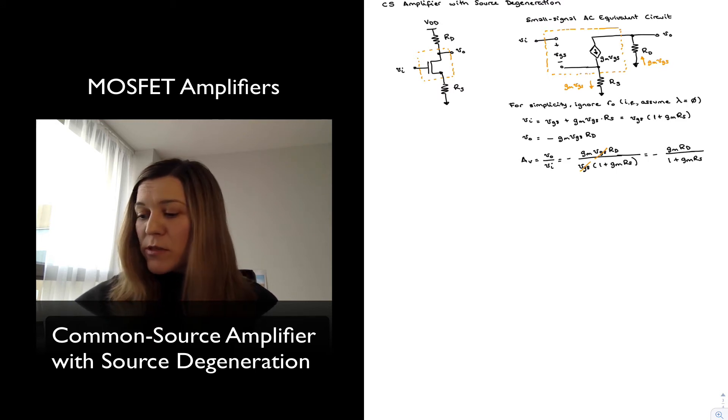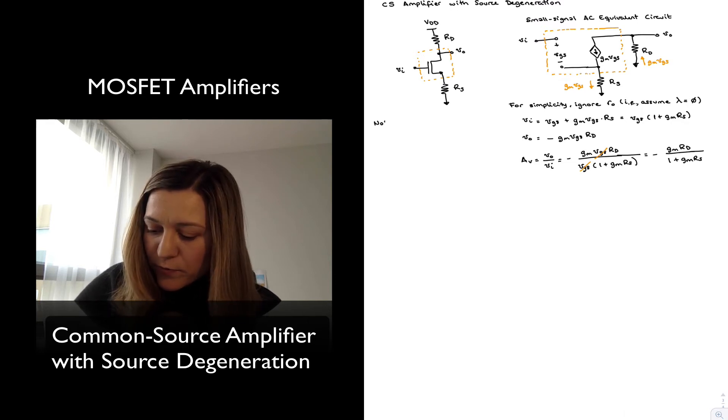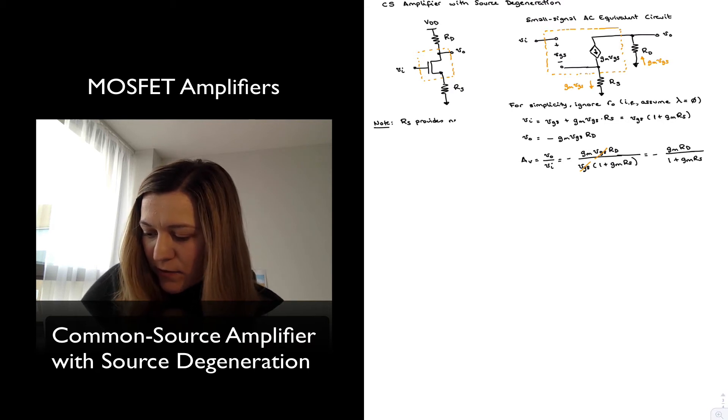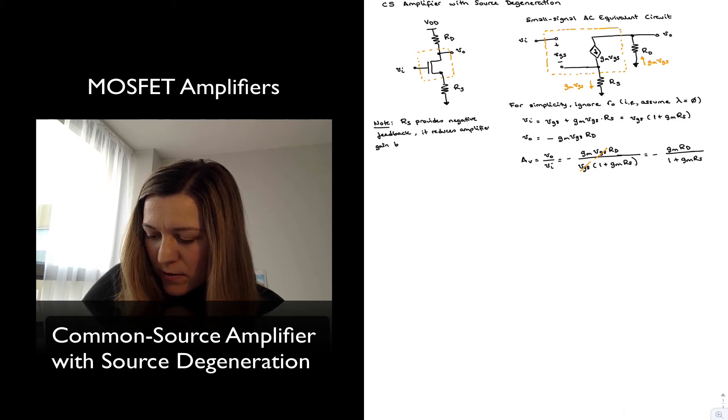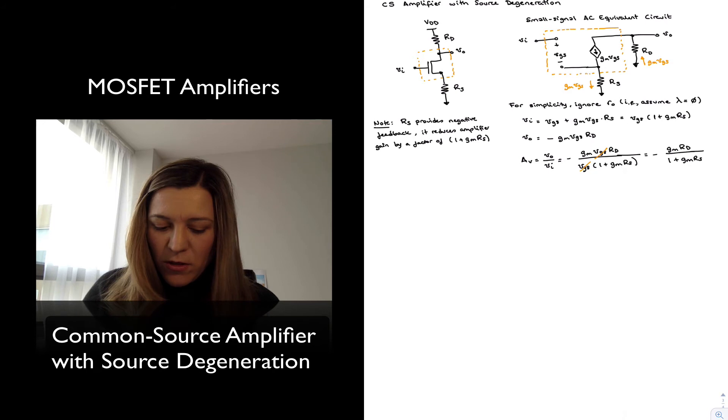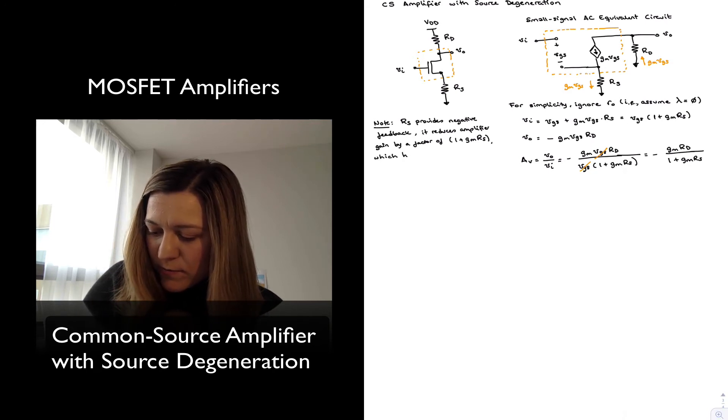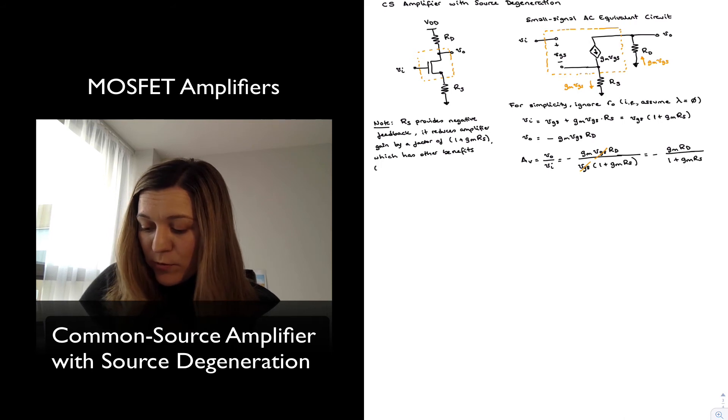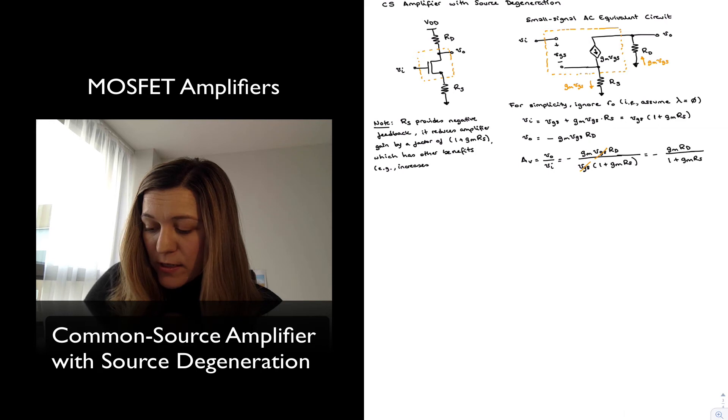And that's exactly what it does. So in terms of performance, RS provides negative feedback to the circuit. It produces a deamplifying factor of 1 plus GM times RS. We used to refer to it as the amount of feedback. And this has other benefits. As we saw, a lot of the benefits of negative feedback. For example, it increases bandwidth of the amplifier.